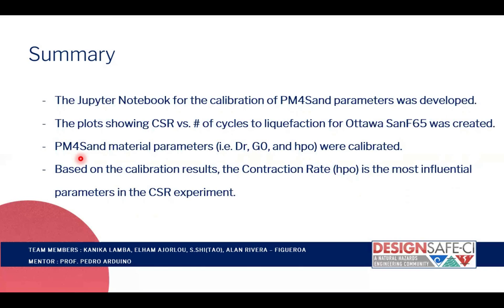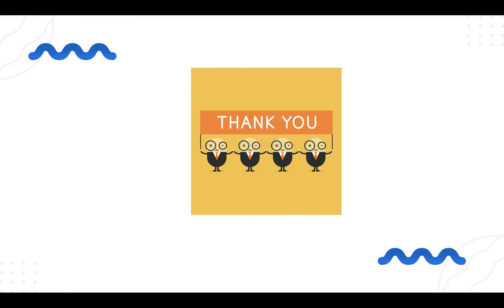In summary, we used the Jupyter Notebook for the calibration of the PM4Sand parameters. We created plots showing cyclic stress ratio versus the number of cycles to liquefaction. We calibrated the PM4Sand material parameters, focusing on three: relative density, shear modulus, and contraction rate. Based on the calibration results, we found that the contraction rate RH0 is the most influential parameter in the cyclic stress ratio experiment. Thank you to DesignSafe for the opportunity to be part of this project and this first academy. It was a pleasure.